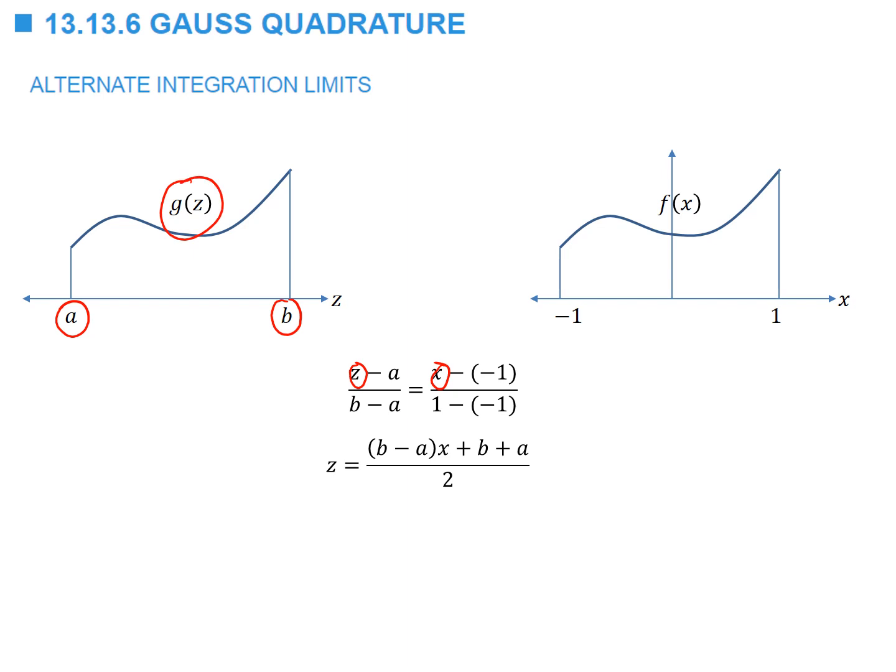Because we're integrating, we're also interested in dz. The relationship between dz and dx is given by: dz equals b minus a divided by 2, multiplied by dx.